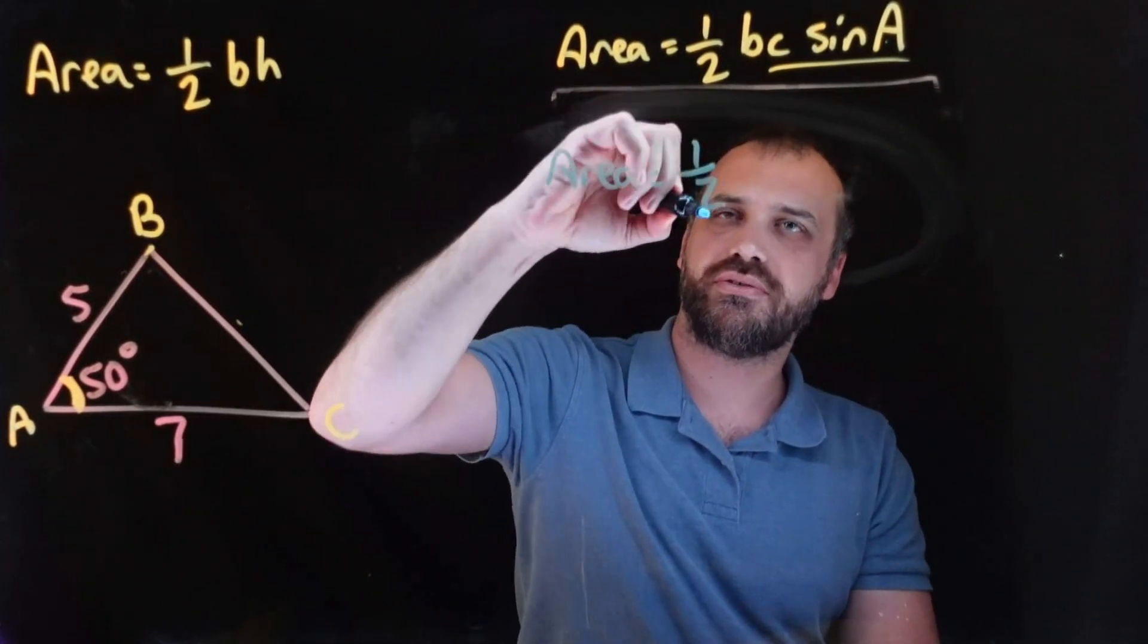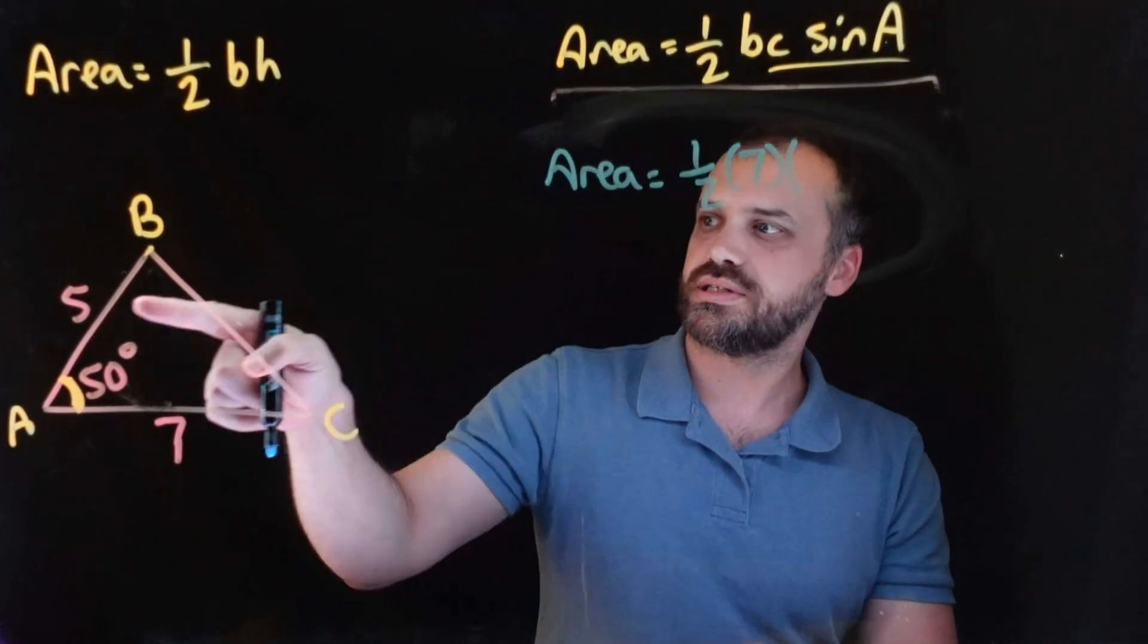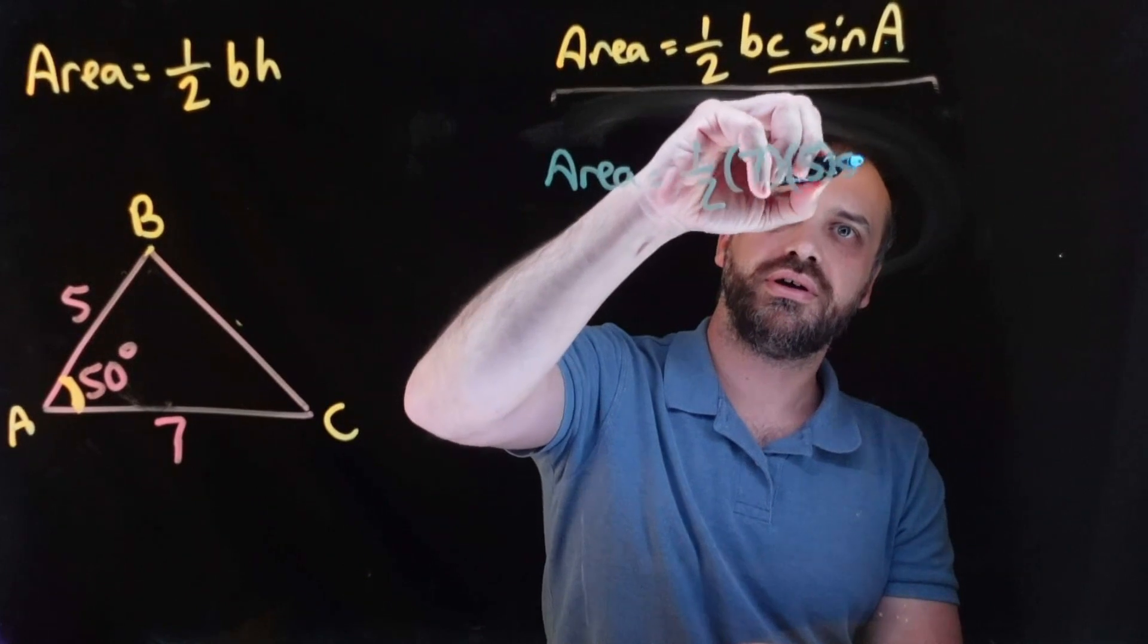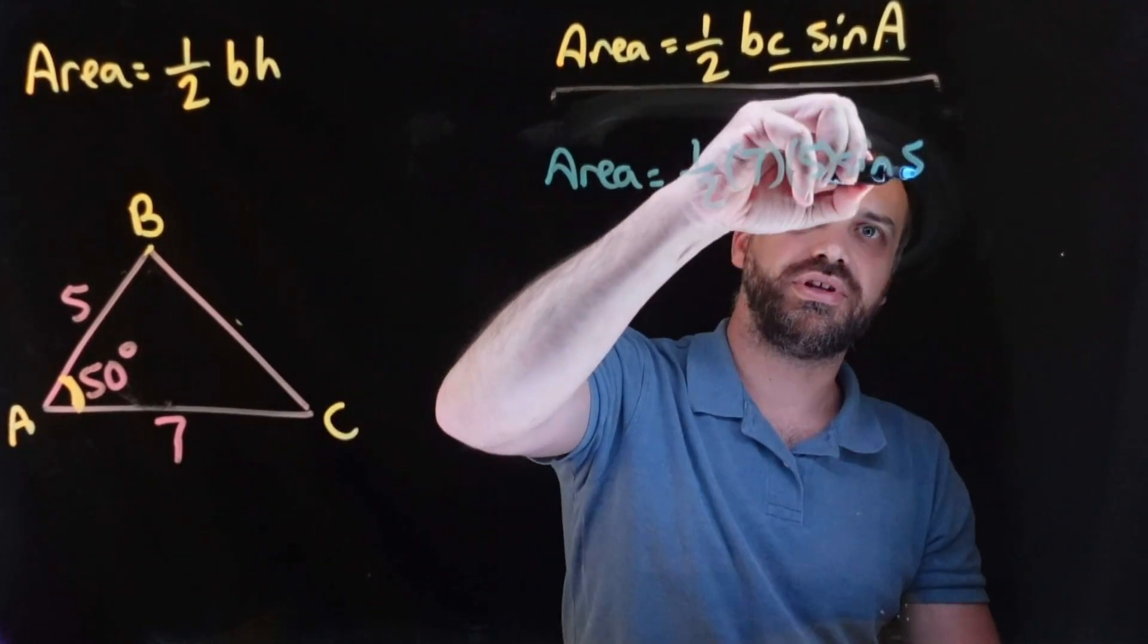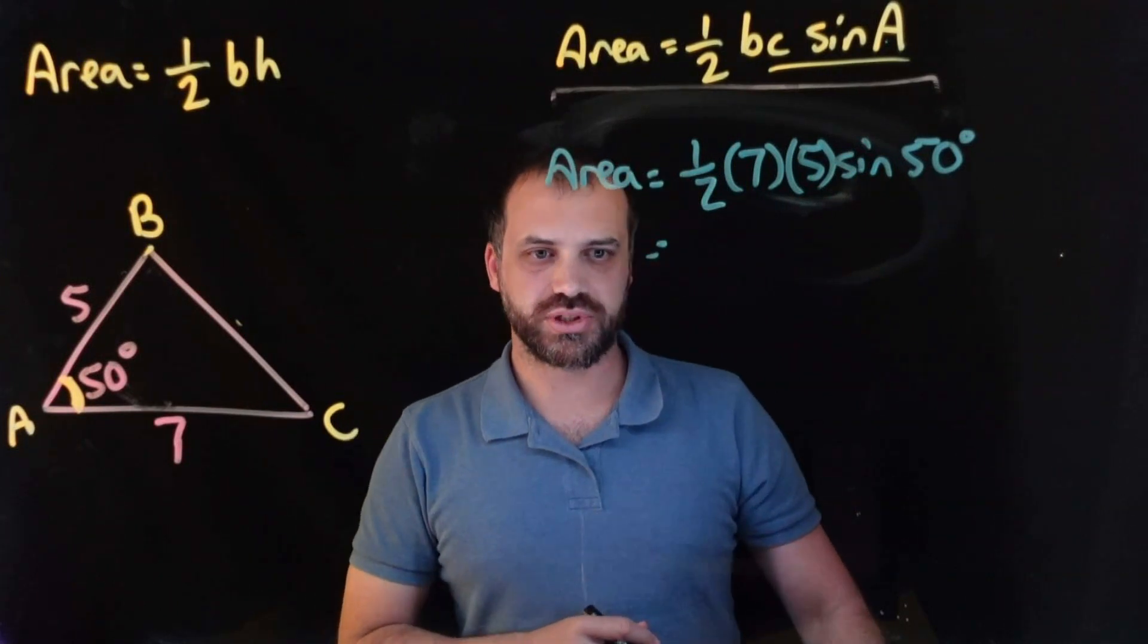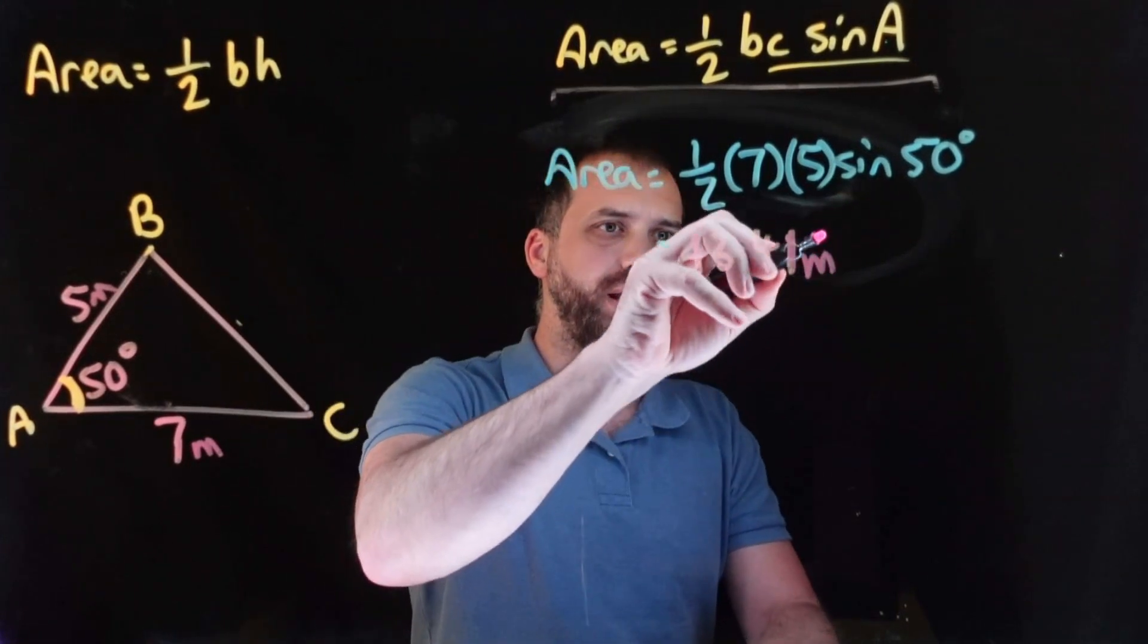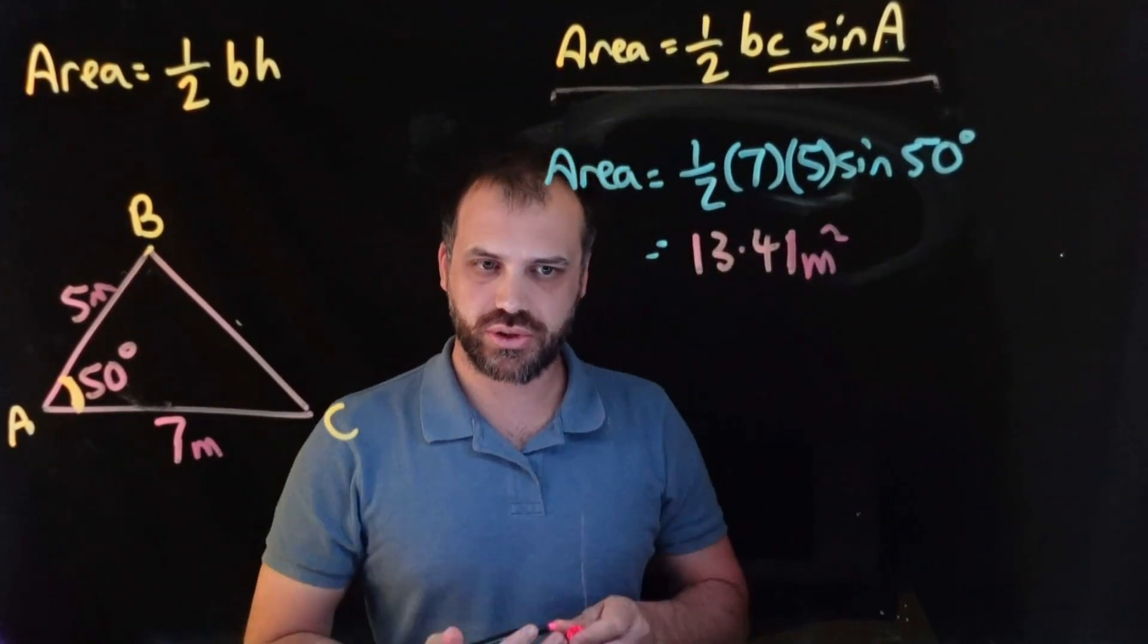the area is equal to half of B. B is 7, C is 5, sine 50 degrees. Half of 7 times 5 times sine 50. 13.41. And if I put some units on here, meters and meters, I can make it area meters squared.